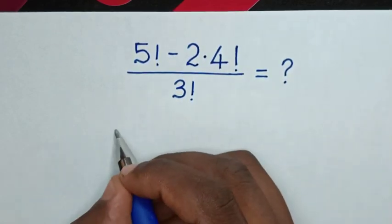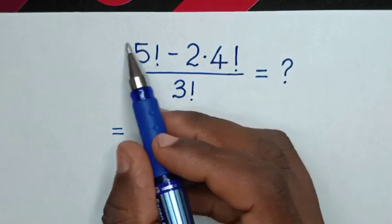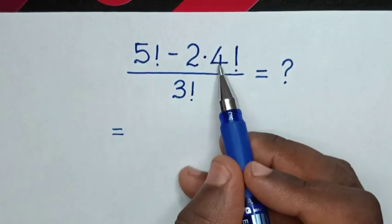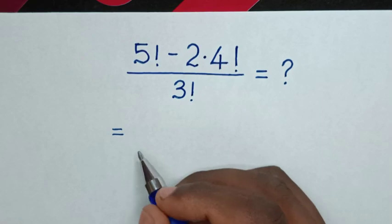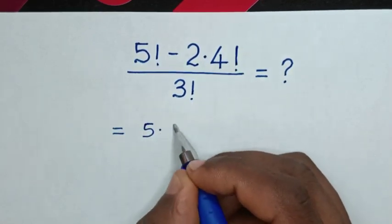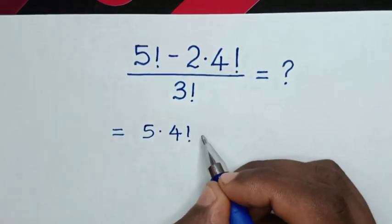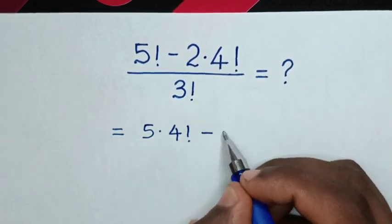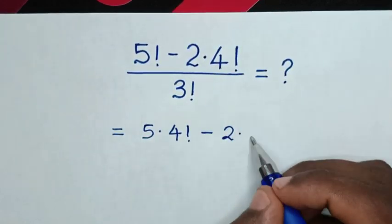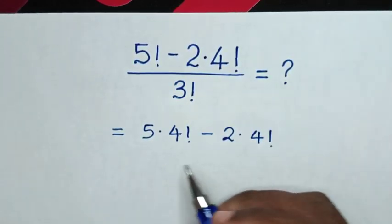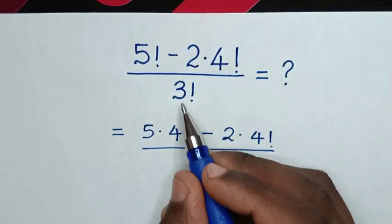So this is equal to 5 factorial to have common 4 factorial. This is same as 5 times 4 factorial, then minus 2 times 4 factorial, then over 3 factorial.